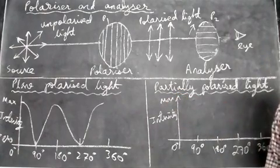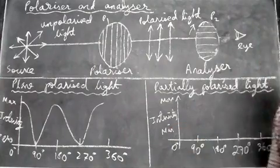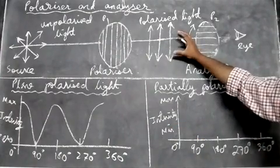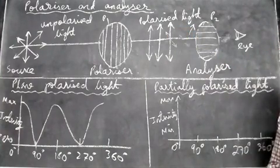The intensity value changes from a maximum value, but now it's not becoming zero. It becomes a minimum value. That means the light coming out is not fully polarized. There is some unpolarized light also, so it's not fully polarized here.